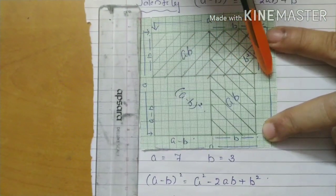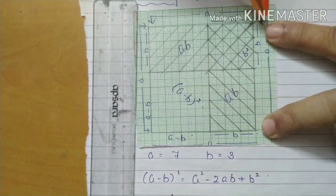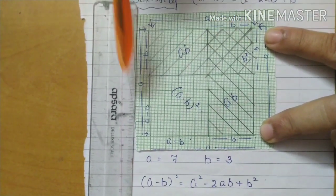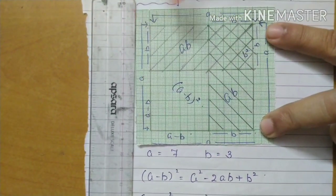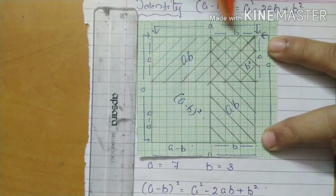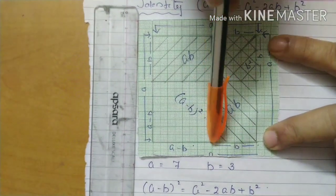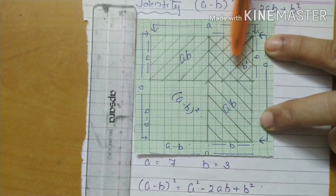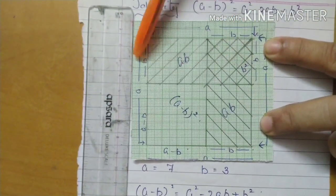You have to draw another line like this, from this side also 1, 2, 3. Both sides you have to draw 3 units. After 3 units here one line, from here also after 3 units one line. So this part is coming common.